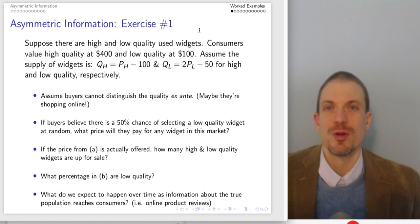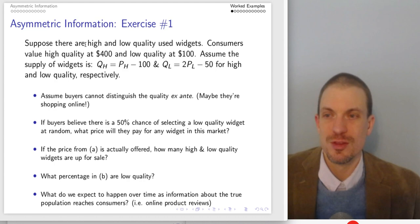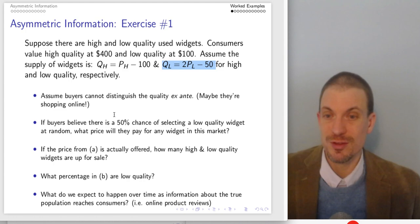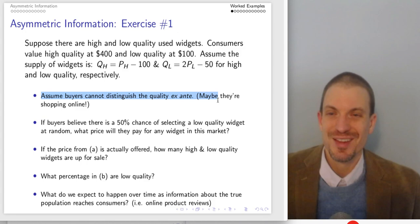Now I want to go over a couple of worked examples. Suppose there are high-quality and low-quality used widgets. Consumers value high quality at $400 and low quality at $100. We have supply functions: supply of high-quality widgets is (P − 100), and supply of low-quality widgets is 2P − 50.